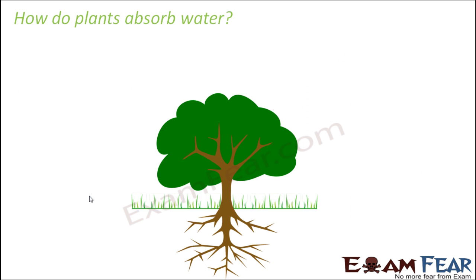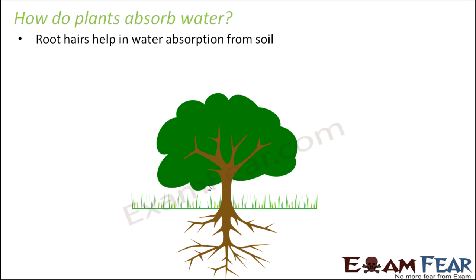Now the question is: how do plants absorb water? It is not only the root hairs that absorb water and then directly pass it to other parts — it doesn't happen like that. Inside the root there are many different layers, so water needs to reach the deeper layers first, and from there move up to the stem, and then from the stem to the leaves. Root hairs are small thread-like structures that help in water absorption from the soil.